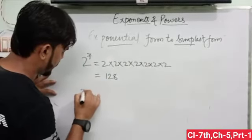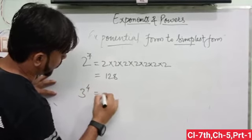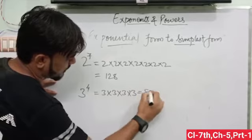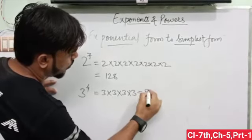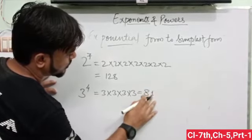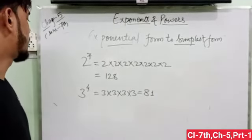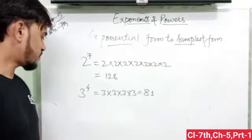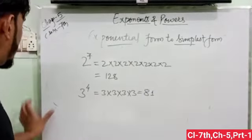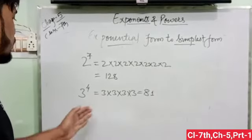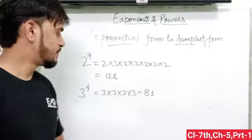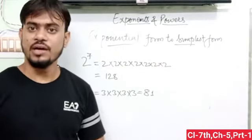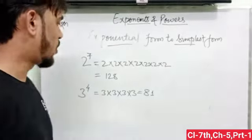Take another example. 3 to the power 4, that means 3 is multiplied by itself 4 times. The result is 81. So this is the form change in exponential form to simplest form. And you already read about this in your earlier classes. Now next we will learn some law of exponential form. What is the law of exponential form?